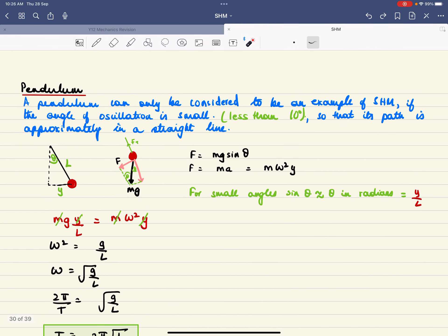Moving on to the pendulum. A pendulum can only be considered to be an example of SHM if the angle of oscillation is small, less than 10 degrees, so that its path is approximately in a straight line. Because if you swing a pendulum through large angles, it's going to describe an arc of a circle.